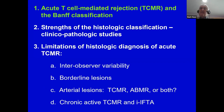I'm going to talk about inter-observer variability, borderline lesions, and arterial lesions, which have been shown to be related to TCMR but also antibody-mediated rejection, and finish with a section on chronic active T-cell mediated rejection.